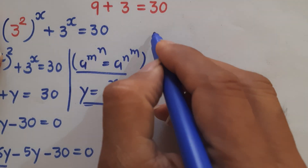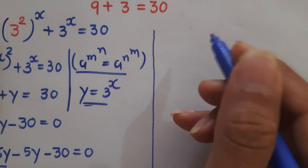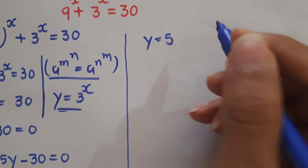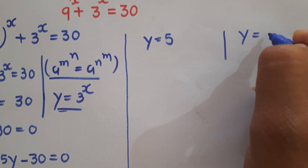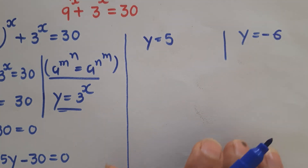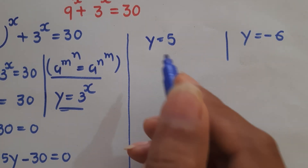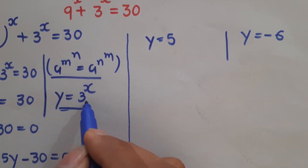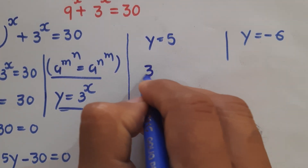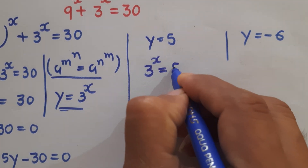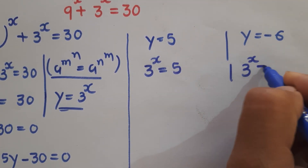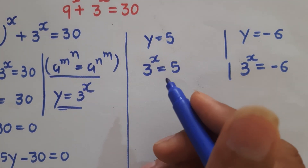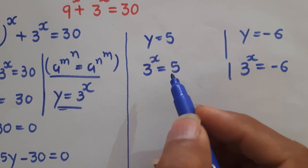We found two solutions: y equals 5 and y equals minus 6. Recalling our assumption that y equals 3 to the power x, we substitute back to get 3 to the power x equals 5, and 3 to the power x equals minus 6.